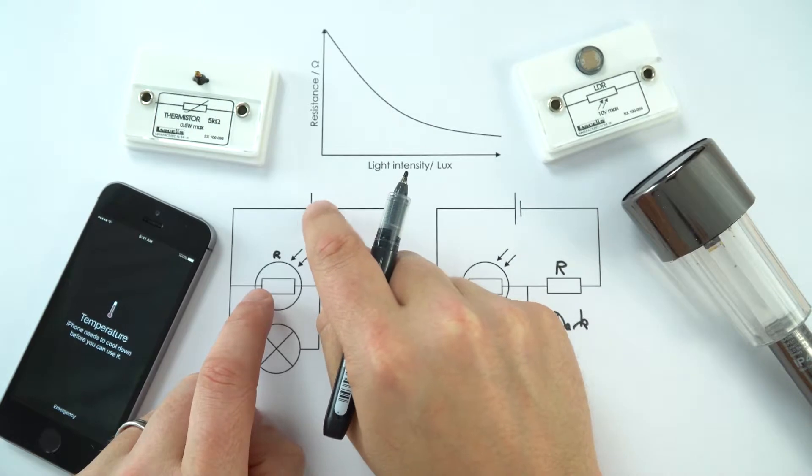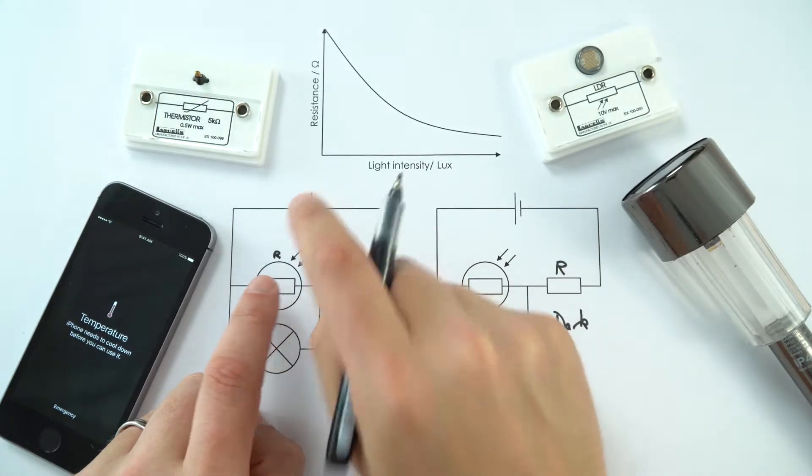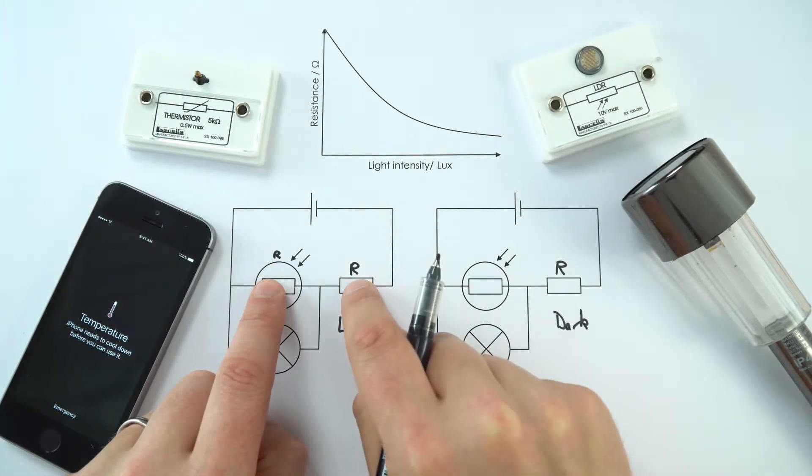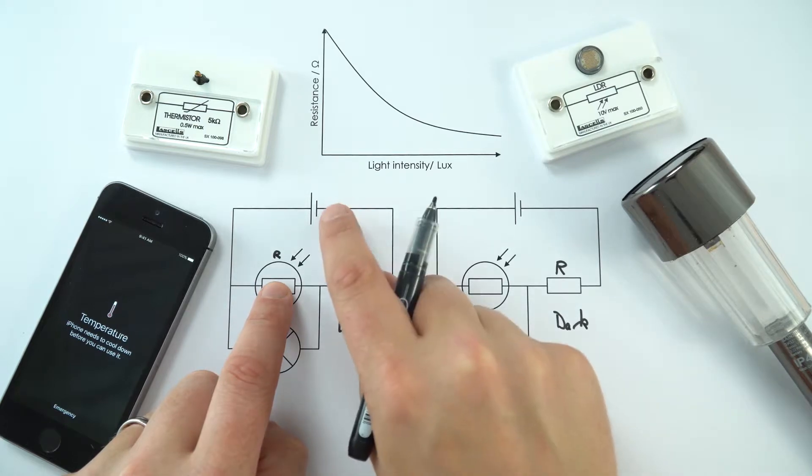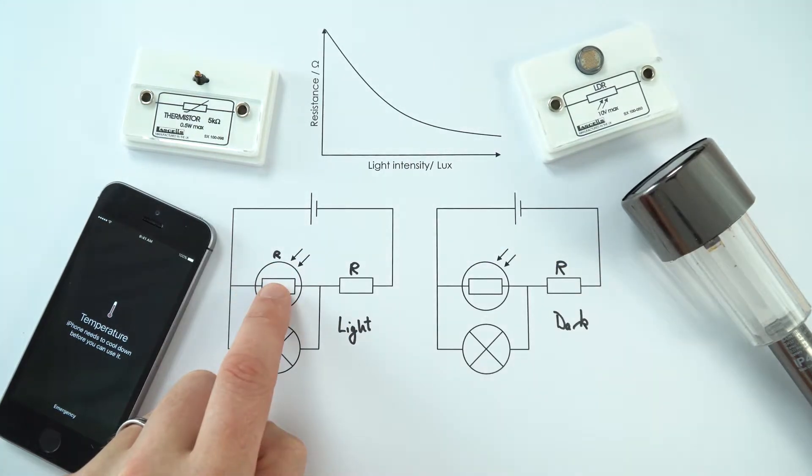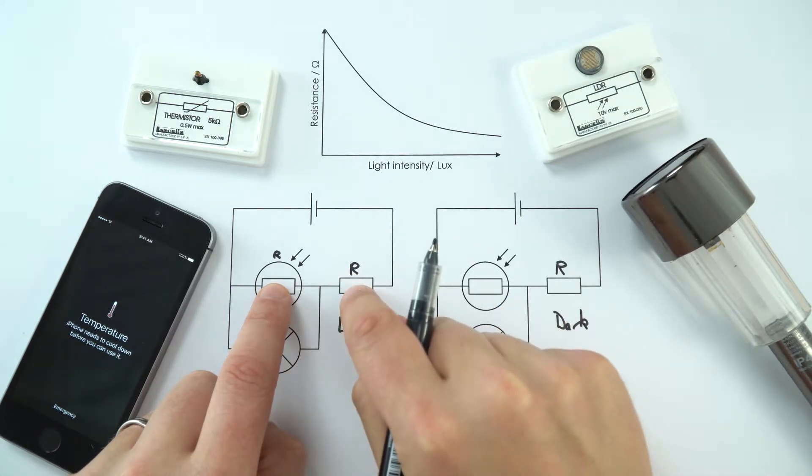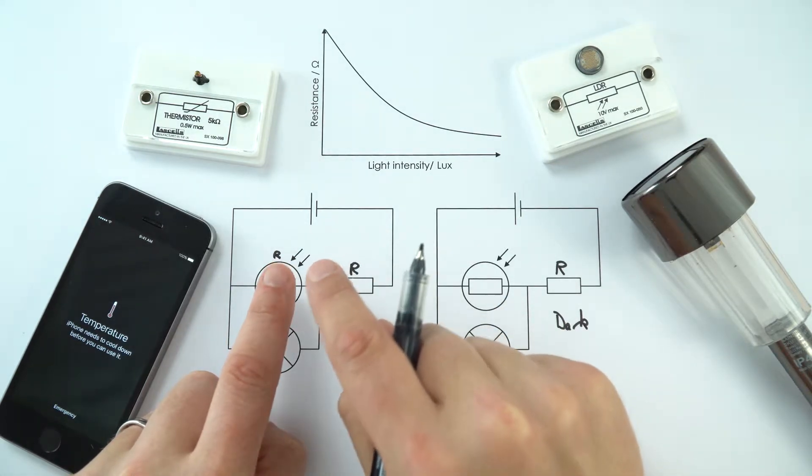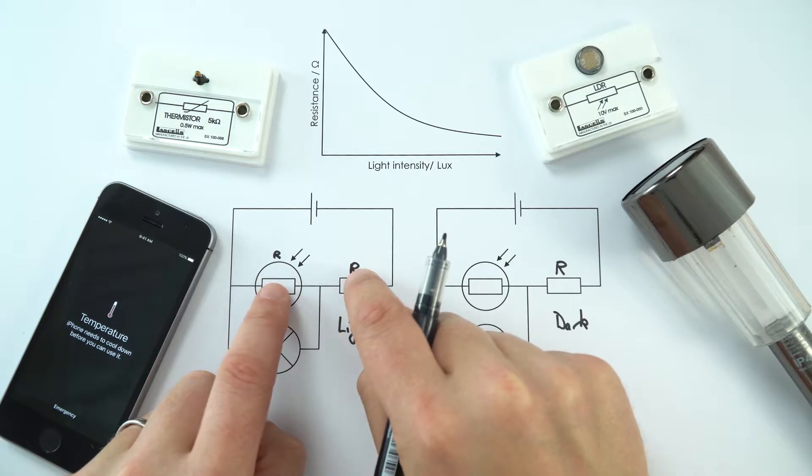Say for example we had 10 volts from this cell over here. If that's smaller than that, it's going to get a smaller share of that potential difference. So maybe that was a 10 volt supply, this might get 1 volt and that might get 9 volts. So the way that that potential difference is shared depends on the size of the resistances.